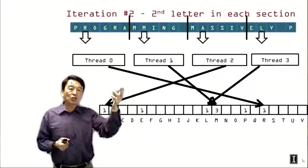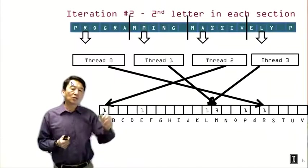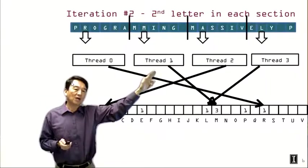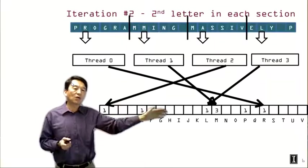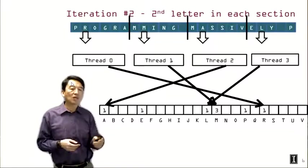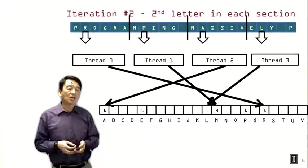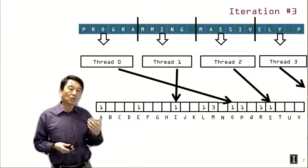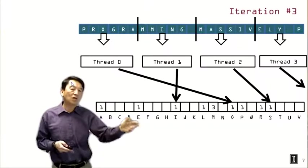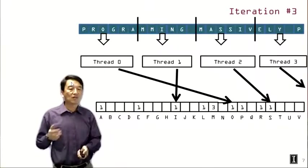Moving on, we have iteration two where everyone will be processing the second letter in each section. So thread zero will see an R, thread one will see an M, thread two will see an A, and thread three will see an L. So each one of them will be going to a different location in this case to increment the counters. So we get progress in terms of the non-zero counters or incremented counters in the memory. We continue with iteration three. Now we have O, I, S, Y. And Y is not shown in this picture. So we continue to increment the counters and continue to see more non-zero counters as a result of iteration three.